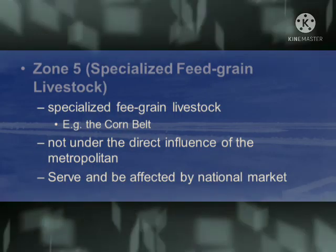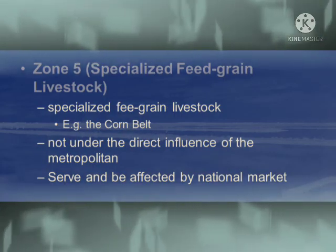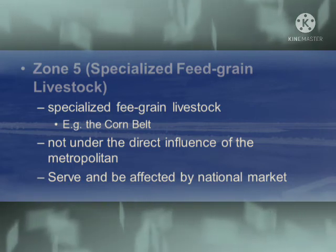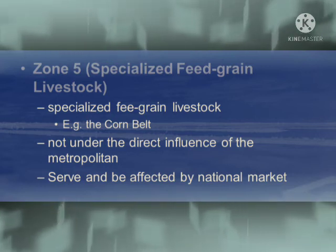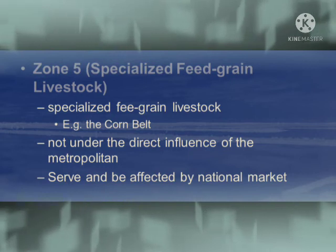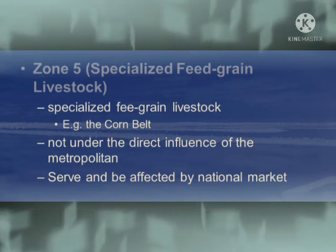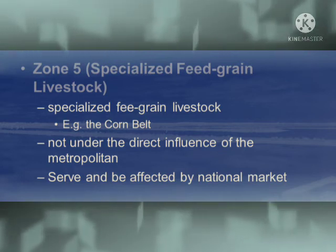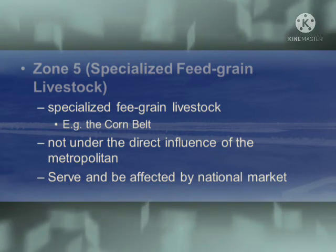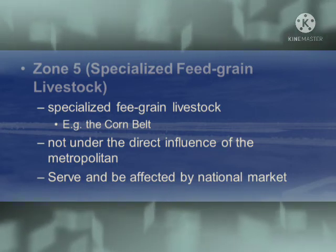Zone five is specialized feed grain livestock — for example, the corn belt. This is the most important and effective feed grain zone in the area. It is not under the direct influence of the metropolitan area and is instead served by and affected by the national market.